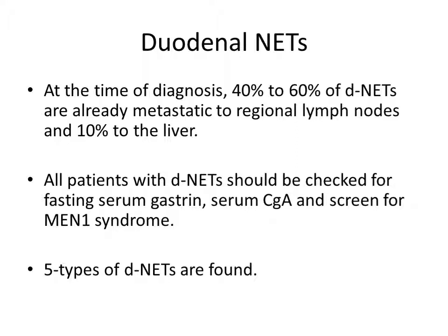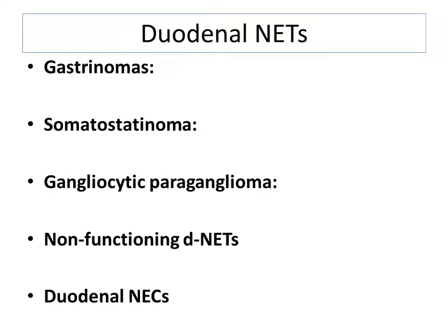All patients with DNETs should be checked for fasting serum gastrin, serum CgA, and screened for MEN-1 syndrome. Five types of DNETs are found: gastrinoma, somatostatinoma, gangliocytic paraganglioma, non-functioning DNET, and duodenal neuroendocrine carcinoma.